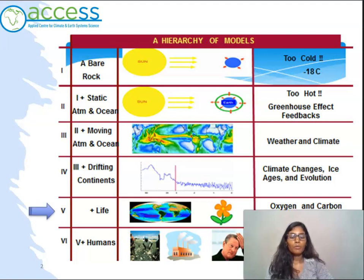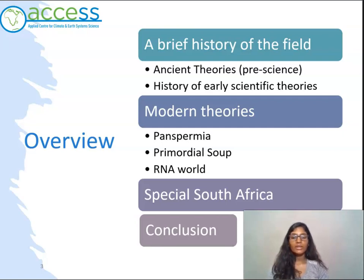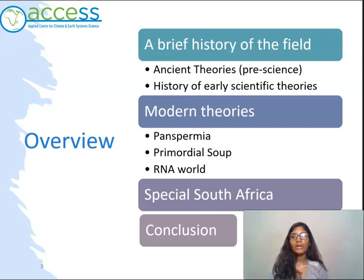We are now at model number 5 and we will be looking at life. To understand how we got to where we are with our modern theories on how life began, we have to first understand the ancient theories and early scientific theories on how life first came to be. We will then go on to understand how we have developed our modern theories of how life on Earth began. We will also try to understand how South Africa is special in the story of the origin of life.